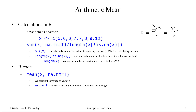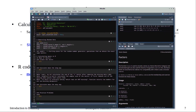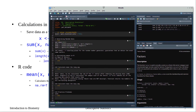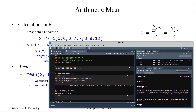Calculating the arithmetic mean is fairly easy in R. We can do it two ways — the easy way using the built-in mean function, or the longhand way writing the equation. First, I'll create our vector using c: 5, 6, 6, 7, 7, 8, 9, and 12, then run it.